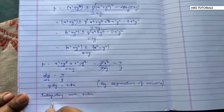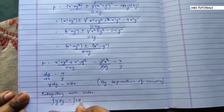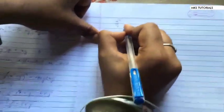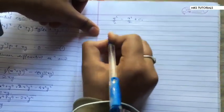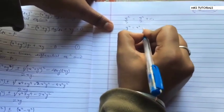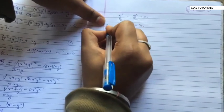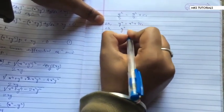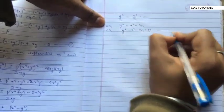Integrating both sides: y dy = x dx, so y²/2 = x²/2 + c₁. Two को multiply करने पर, this will be y² = x² + 2c₁. इसको rearrange करो: y² - x² - 2c₁ = 0. Let this be equation number 2.